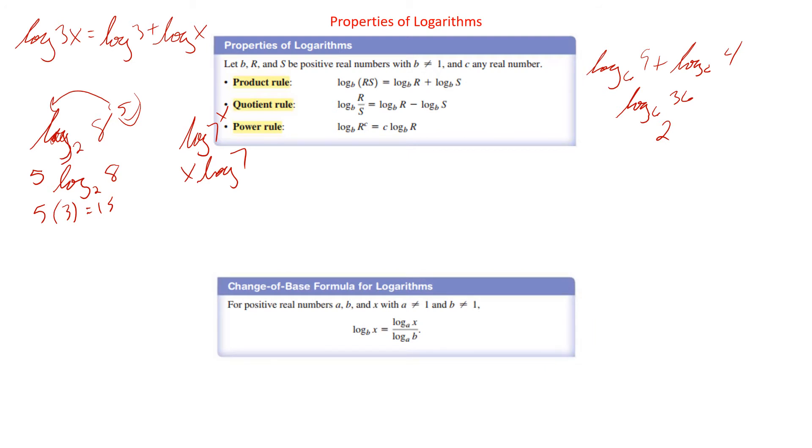Change of base formula. Change of base formula is nice because our calculators do logs and natural logs, like common logs and natural logs. What if we have a log base 7? Well, there we get change of base formula. And what the change of base formula is, we have log base b of x equals log of the new base of x over log of the new base of the old base. So if we had, say, log base 7 of 13, well, 7 to the y equals 13. I don't know. My calculator is not going to do it.